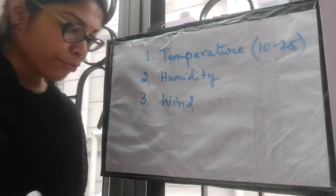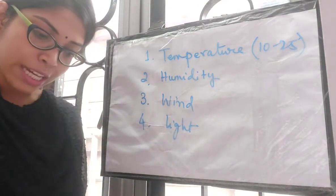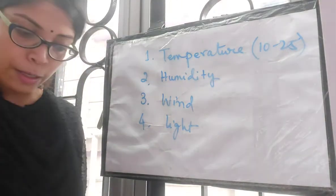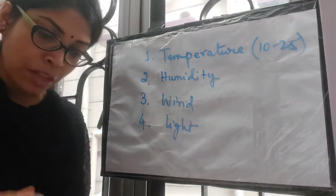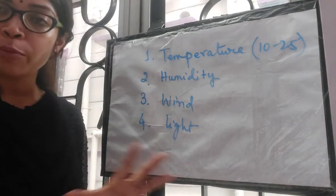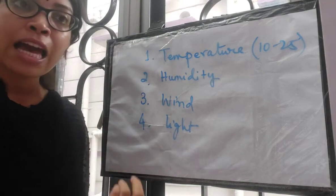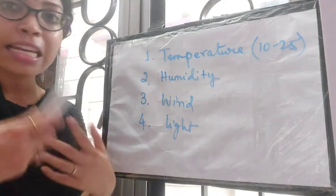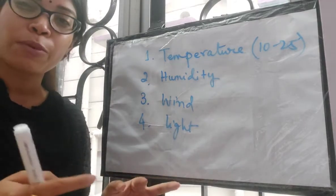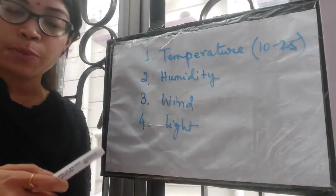Coming to the fourth point which is light. Stomata remain open during daytime and close during night due to photosynthetic gaseous exchange. We know that stomata open during daytime and remain closed at night. Thus the rate of stomatal transpiration is higher during the day. Since 80 to 90 percent of transpiration takes place through the stomata, when there is light there will be a higher rate of transpiration, and at night only cuticles and lentices perform a little transpiration — about 10 to 12 percent.